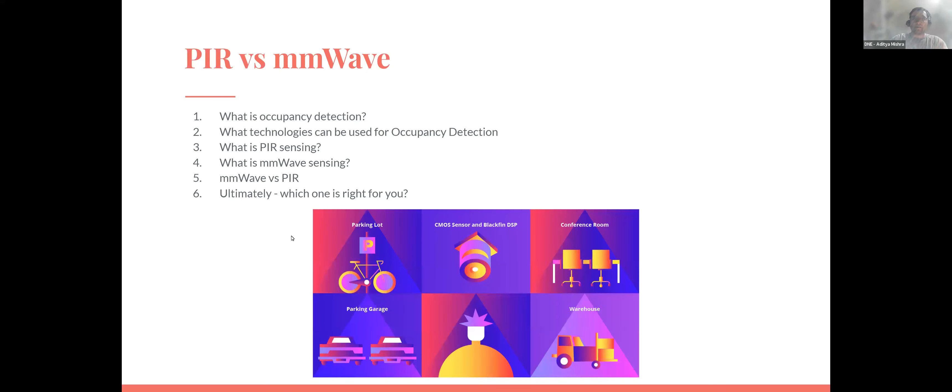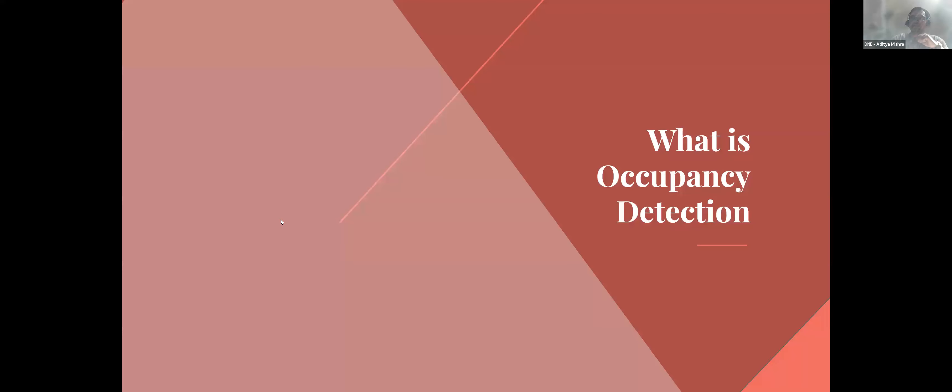This is what we're going to be talking about today. We're first going to talk about what exactly occupancy detection is, and then we're going to briefly cover what different types of technologies can be used for occupancy detection. We're going to go through a high level overview of what PIR sensing is and what millimeter wave sensing is, compare and contrast the two, and ultimately determine which one of these sensors is right for you. So let's get started.